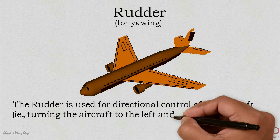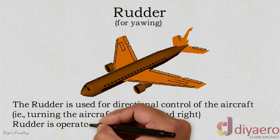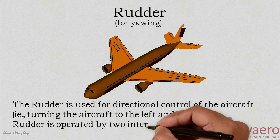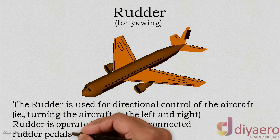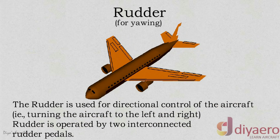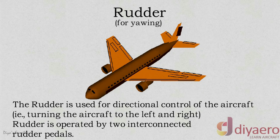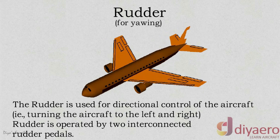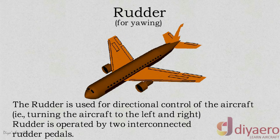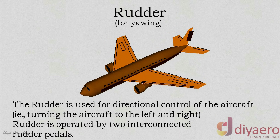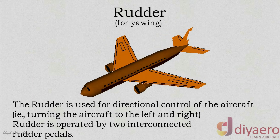This yaws the aircraft nose to the left with respect to the normal axis. The effectiveness of the rudder increases with speed. Therefore, large deflections at low speeds and small deflections at high speeds will be required to give a particular yaw.